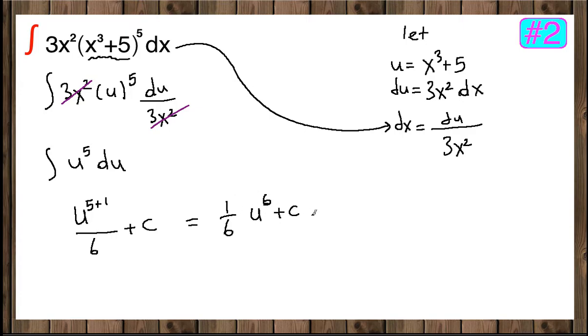Let's bring u back. u was x cubed plus 5, so the result is 1 over 6 times x cubed plus 5 to the 6th plus c. This is the final answer.